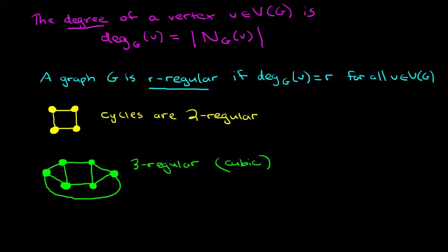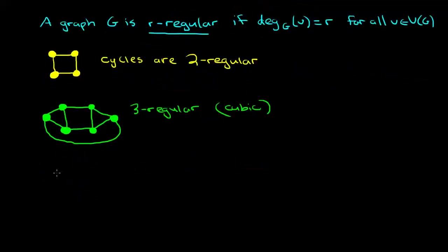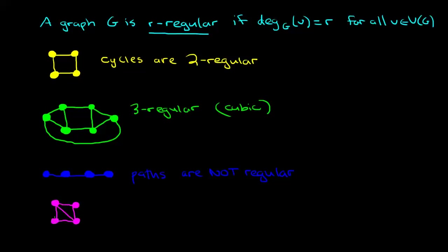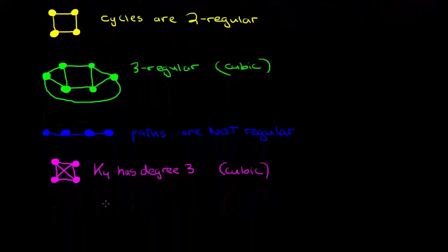Let's take a look at a couple more examples. Sometimes when you learn a new concept it's useful to see a non-example — something that is not a regular graph. It turns out that paths are not regular because some of the vertices have degree two and some of them have degree one. One really nice example is the case of complete graphs. The complete graph on four vertices has degree three everywhere, so it's three-regular or cubic. In general, the complete graph on n vertices is n minus one regular.